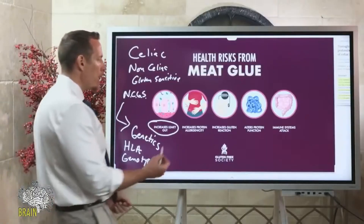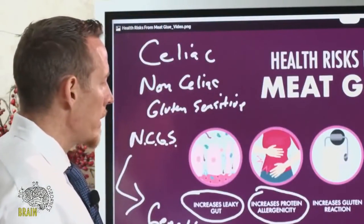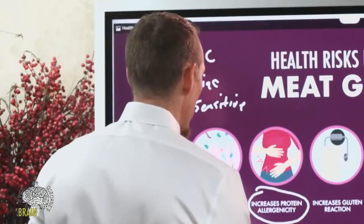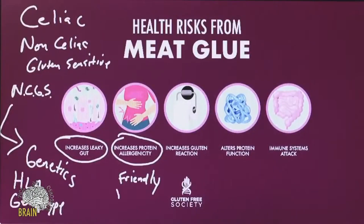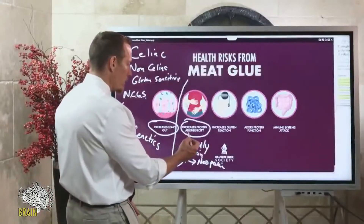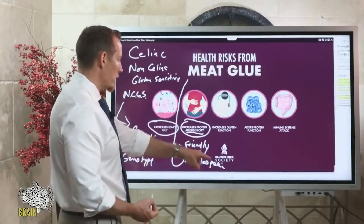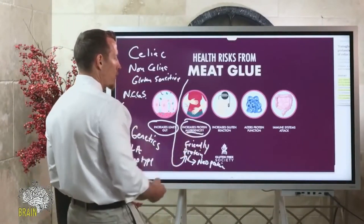We know that gluten or meat glue exposure can increase the risk of developing leaky gut. We also know it makes proteins more allergenic. Meat glue bonds and binds proteins together, so you might have protein A from a food you're eating, and the meat glue forms a novel new protein — a neo-protein. Your immune system might not recognize that, and that's what allergenicity is: your immune system recognizes it as foreign because it's a new protein.